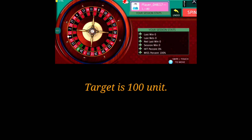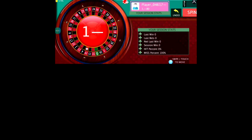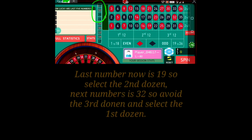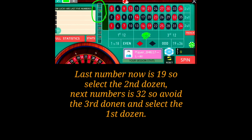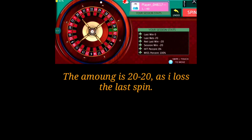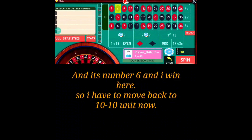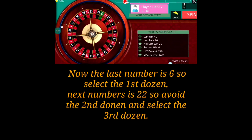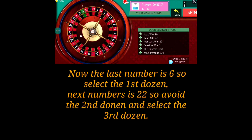My target is another 100 units. It's 19, and I lose here. So I have to look at the last previous numbers — it's 19. I'll put the bets accordingly. Next is 32, so I'll leave that one and put bets at the other position. This time it's 20 units at both positions. The number is 6 and I win here. Since I won at 20 units, I move back to my basic 10 unit bets. The position is now 6.